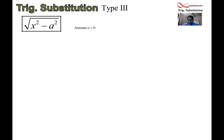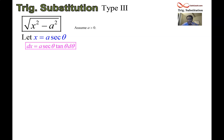In all of these we're assuming that a is greater than zero. For this third type we choose to let x equal a secant theta, and we're going to find out why. As with the others, remember to always immediately find dx. The derivative of secant is secant tangent, so dx equals a secant theta tan theta d theta. The reason we choose this trig sub is because the radical is going to be replaced by a trig function.